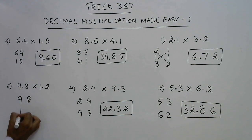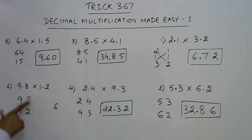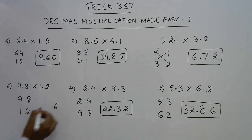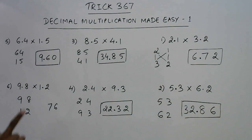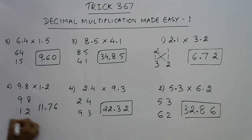Finally we have 9.8 and 1.2. 8 twos are 16, write 6. You have a 1 carry. 18 plus 8 is 26 plus 1 carry, 27, write 7. So you have a 2 carry. 9 plus 2, 11, and put a decimal here. 11.76 is the product of 9.8 and 1.2.